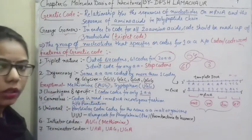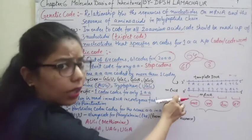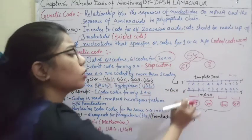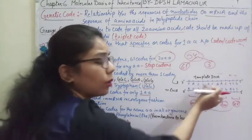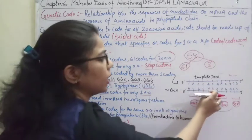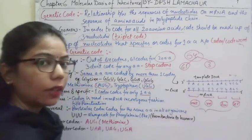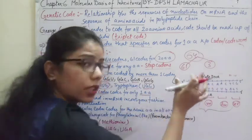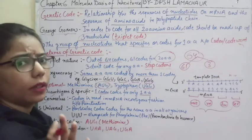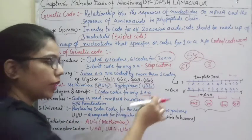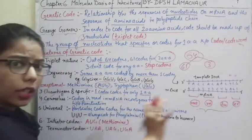When tRNA reads the mRNA codon, it reads continuously. There will be no gap. It will not skip any nucleotide. For example, after AUG it will not skip GU and start from UGU — that will not happen. If it does happen, there will be a change in the genetic sequence and the nucleotide sequence, and ultimately the required protein will not form. So the codon reading must be in a continuous fashion, without punctuation.